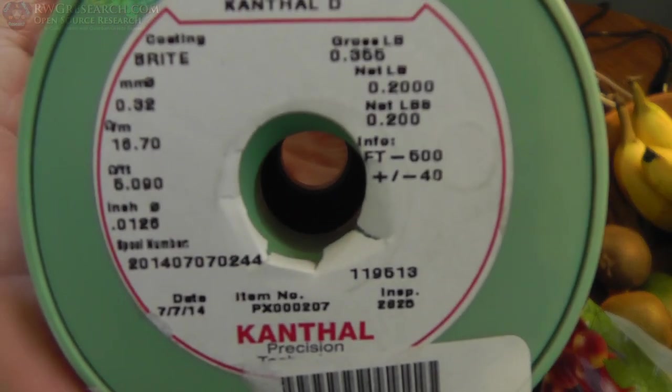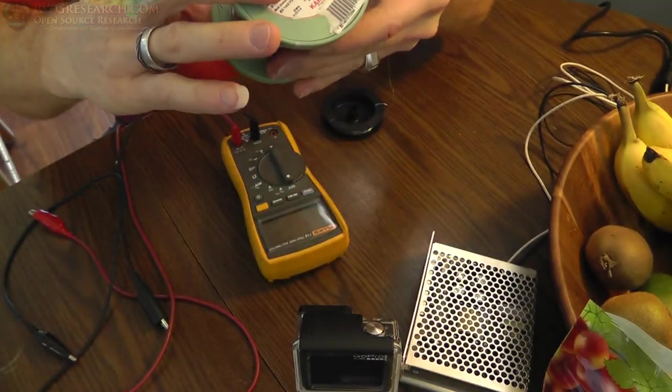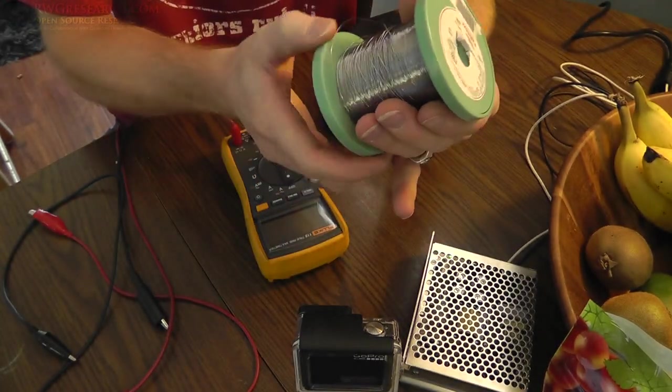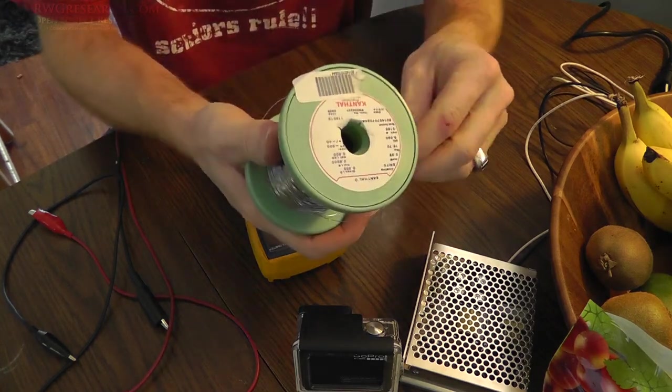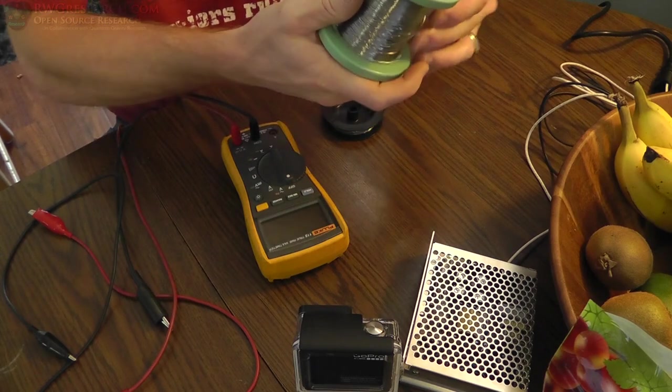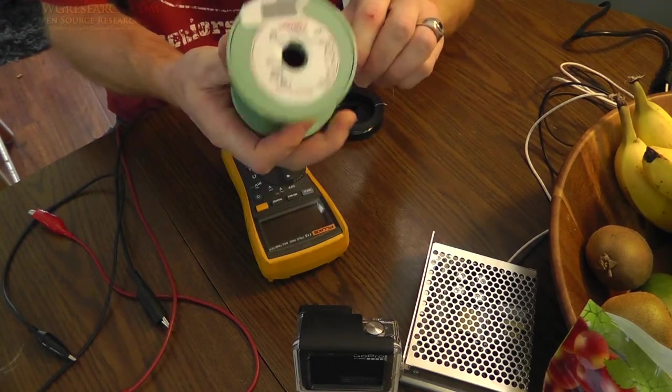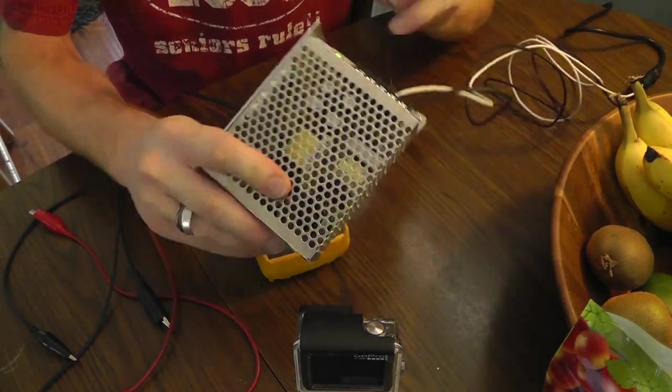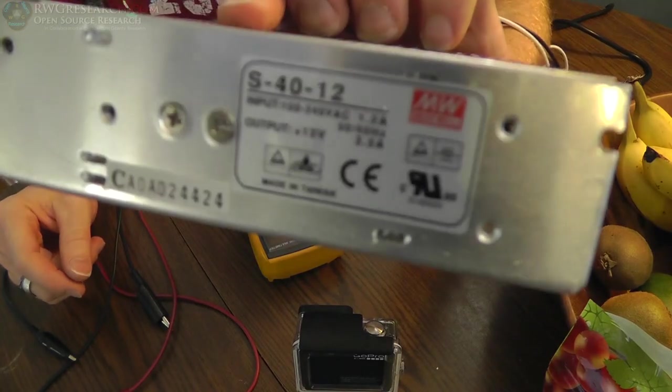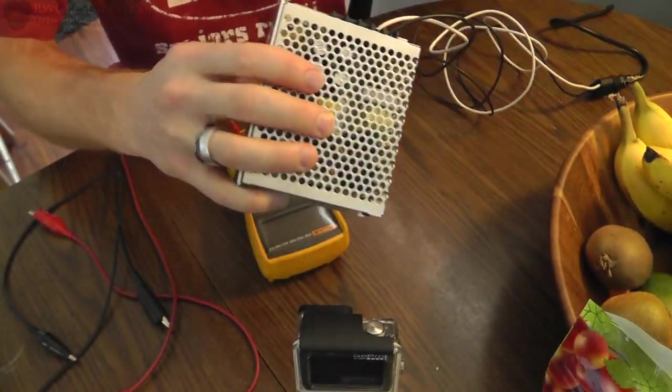You can see the diameter, the size, and everything else here. This is a spool I bought off Amazon or something that was on sale. Leftover scraps. I'm going to get it all tangled if I'm not careful. Okay, basically, what am I going to be doing? First thing I'm going to do is make sure this doesn't go flying everywhere.